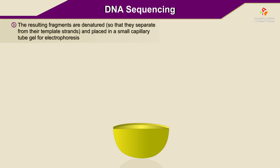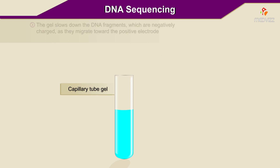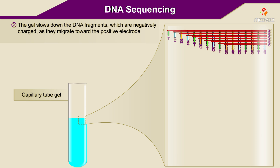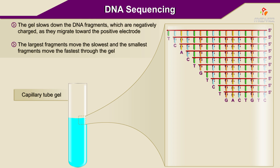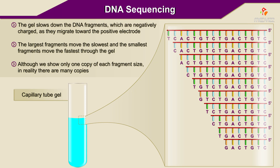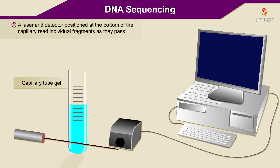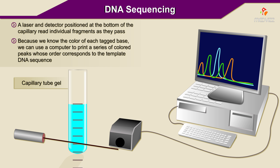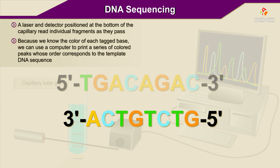The resulting fragments are denatured so that they separate from their template strands and placed in a small capillary tube gel for electrophoresis. The gel slows down the DNA fragments, which are negatively charged as they migrate toward the positive electrode. The largest fragments move the slowest and the smallest fragments move the fastest through the gel. A laser and detector positioned at the bottom of the capillary read individual fragments as they pass. Because we know the color of each tag base, we can use a computer to print a series of colored peaks whose order corresponds to the template DNA sequence.